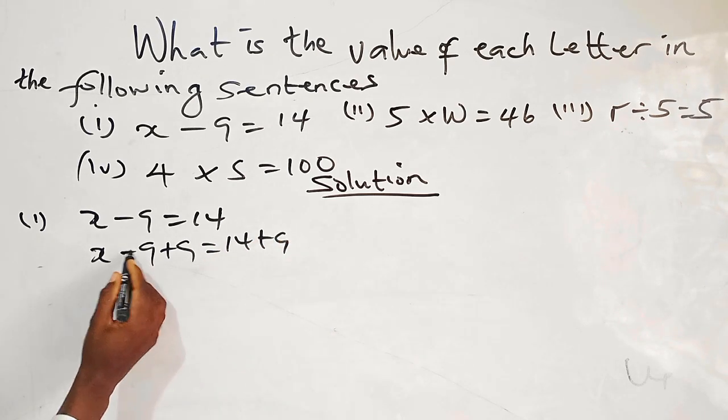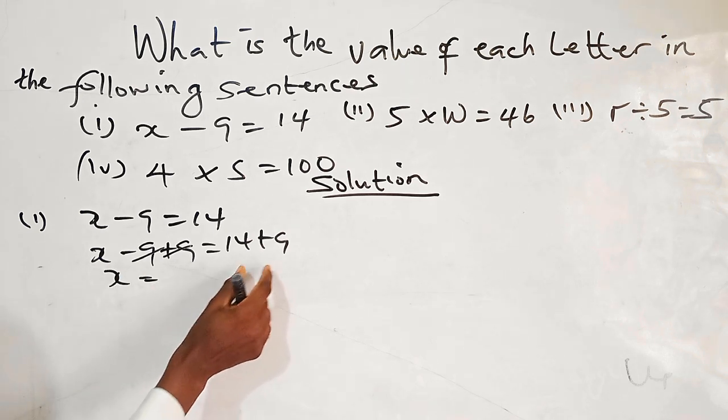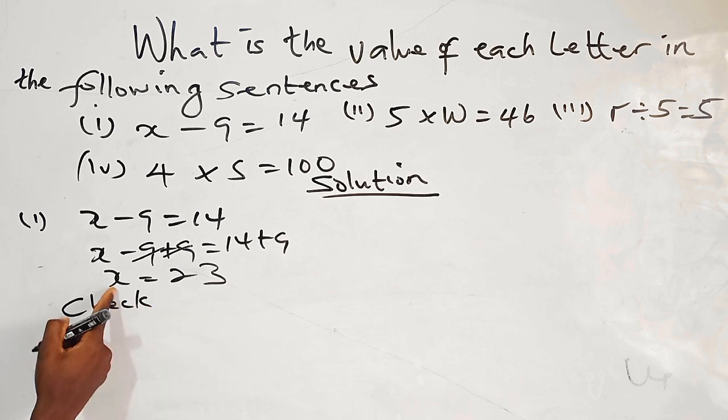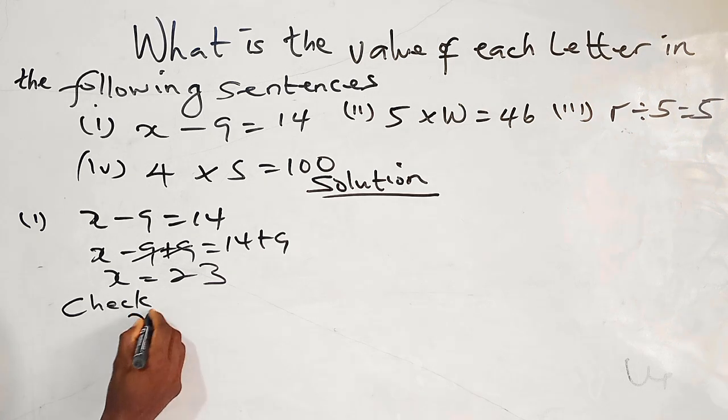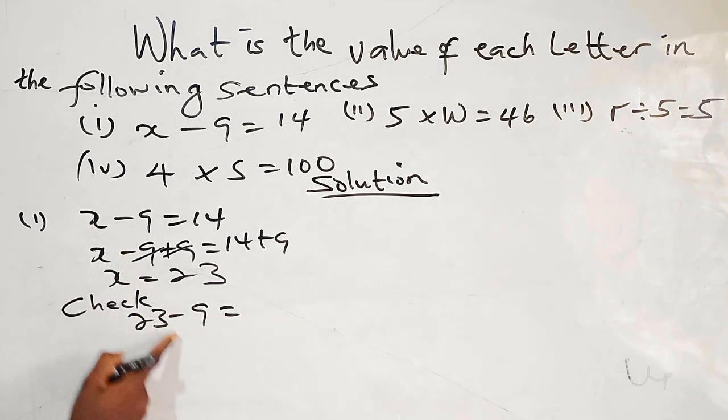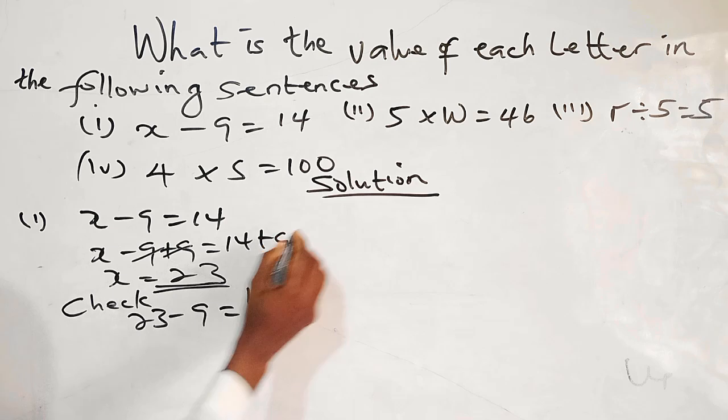Okay, so minus 9 plus 9, this one is out. So you have just X. So 14 plus 9, you have 23. So by the time you check this and put the value of X to be 23 here, you will get 14. So you have 23 minus 9. X is now 23 minus 9, that gives us 14. So that means X stands for 14. That is number one.